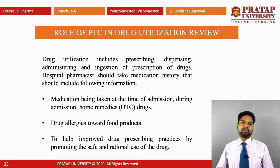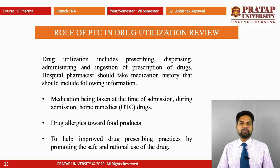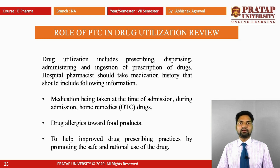Next is the role of the PTC in drug utilization review. Drug utilization includes prescribing, dispensing, administering, and injection of prescription drugs. Hospital pharmacists should take a medication history that includes the following information: medications being taken at the time of admission, during admission, and home remedies — meaning OTC drugs, which are over-the-counter drugs taken without prescription. Second is drug allergies towards food products, and third is to help improve drug prescribing practices by promoting the safe and rational use of drugs.